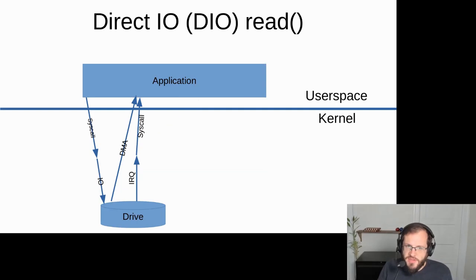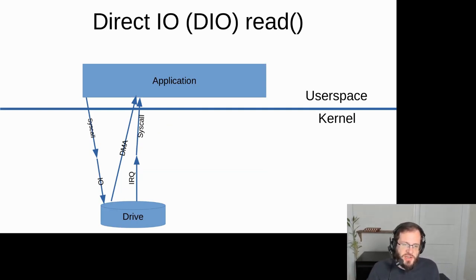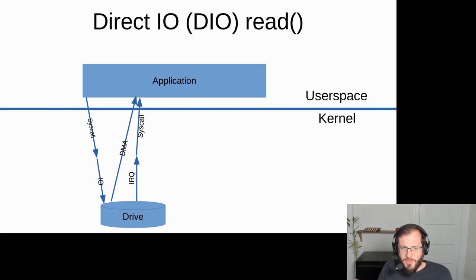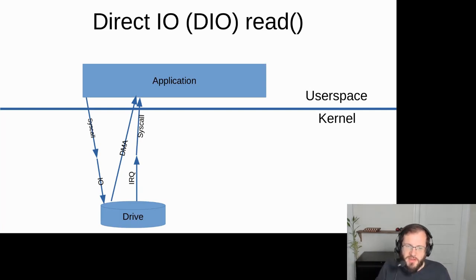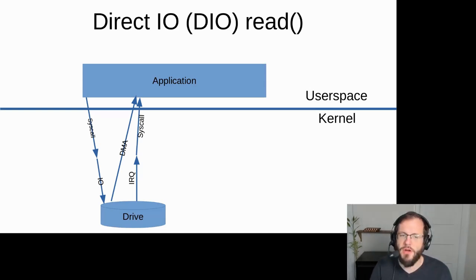In contrast, with direct IO the kernel page cache is not included. The application does a system call, which is converted into an IO by the kernel, and the drive can directly do memory access into the buffer provided by the application via DMA. So there's no manual copying of data required.